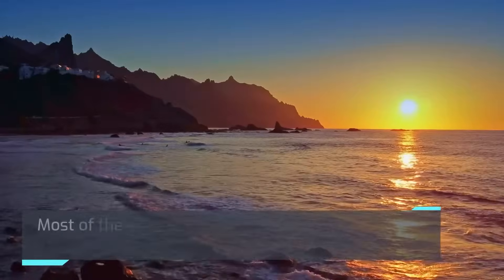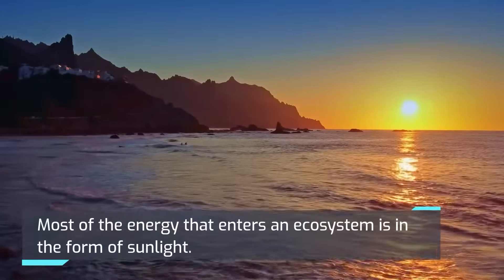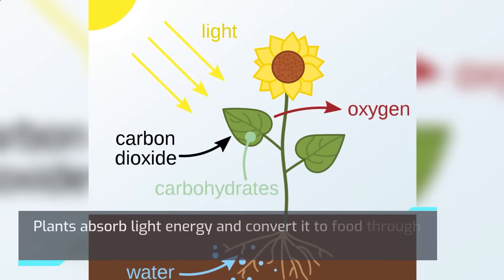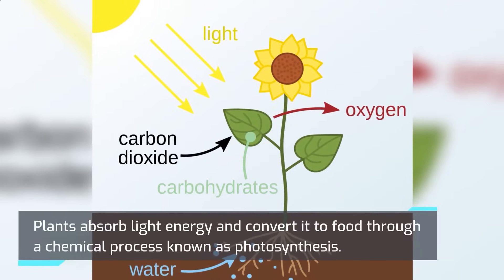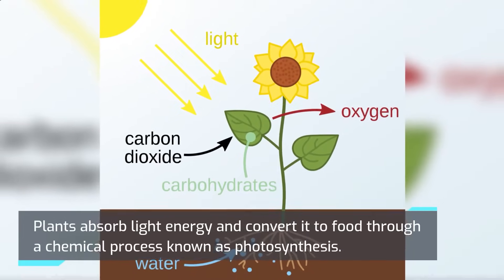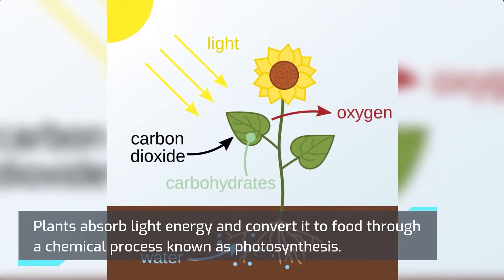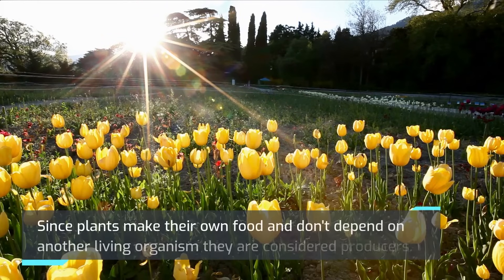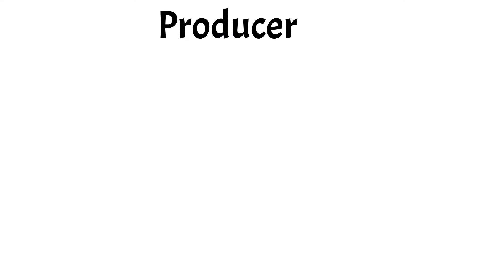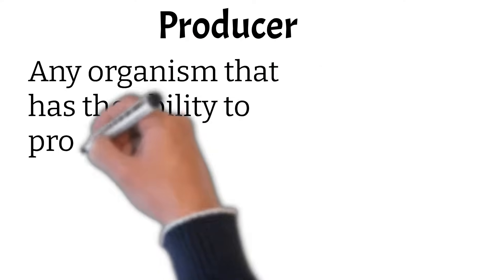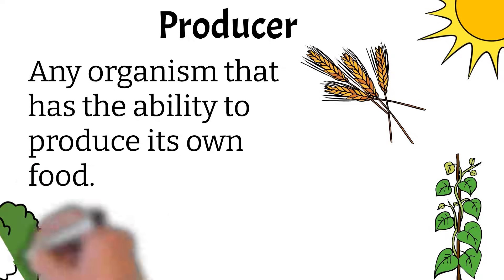Most of the energy that enters an ecosystem is in the form of sunlight. Plants absorb light energy and convert it to food through a chemical process known as photosynthesis. Since plants make their own food and don't depend on another living organism, they're considered producers. A producer is any organism that has the ability to produce its own food.